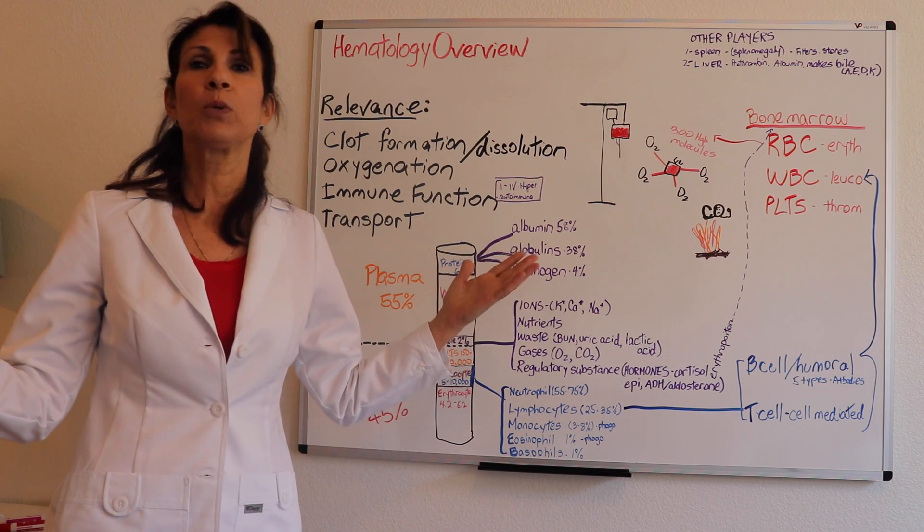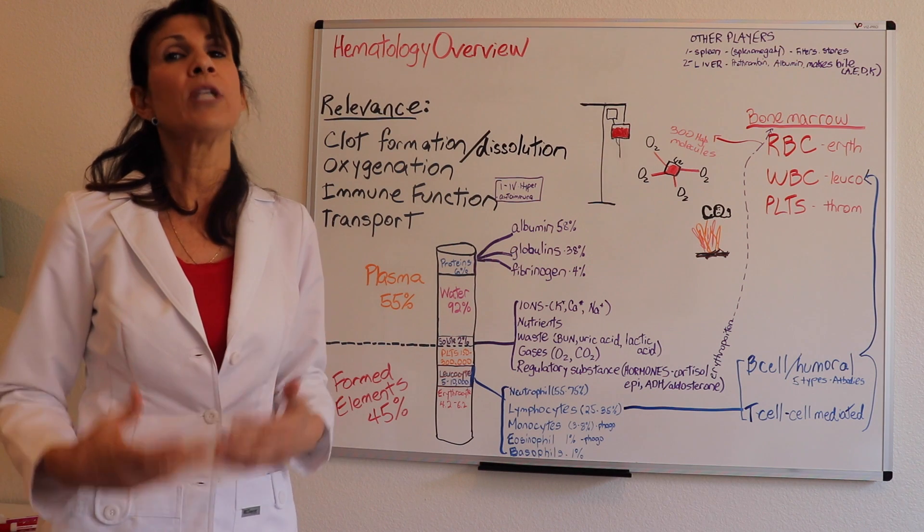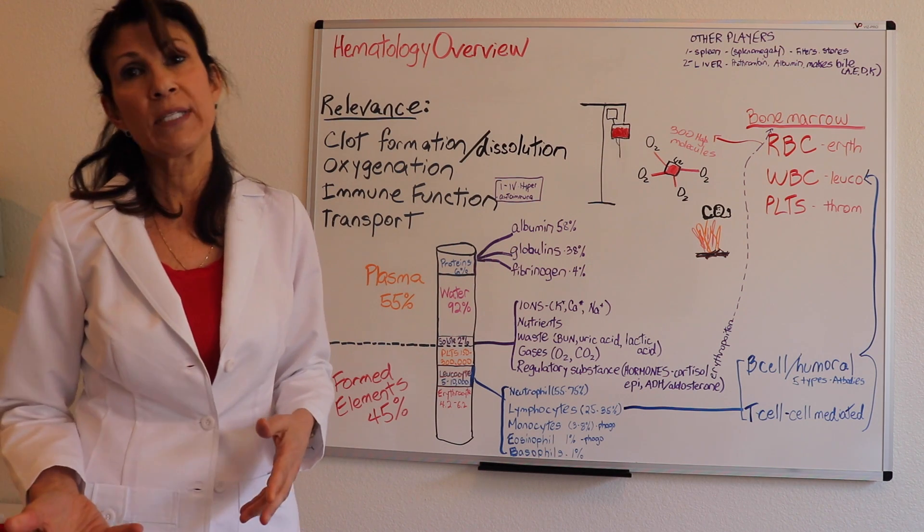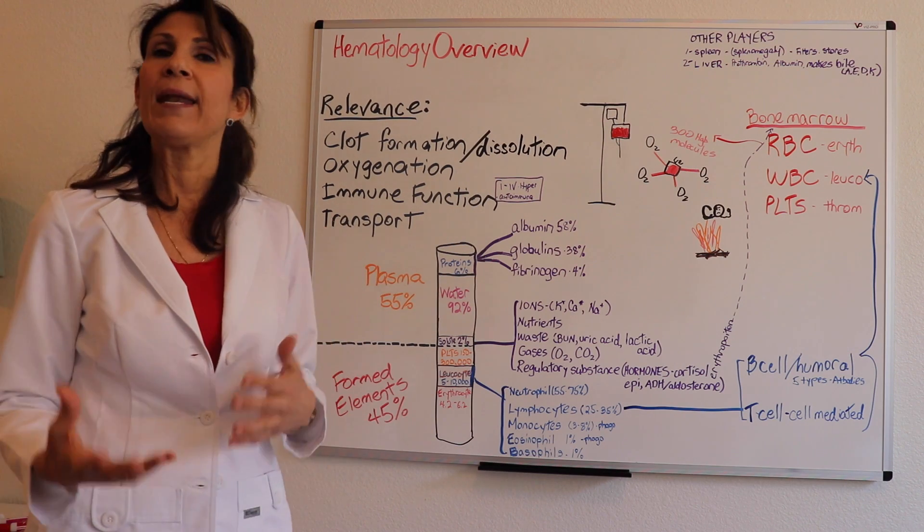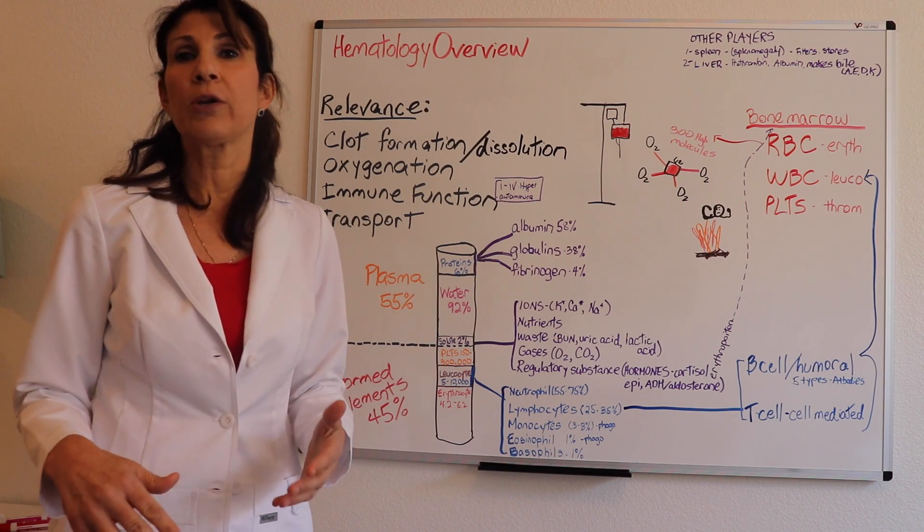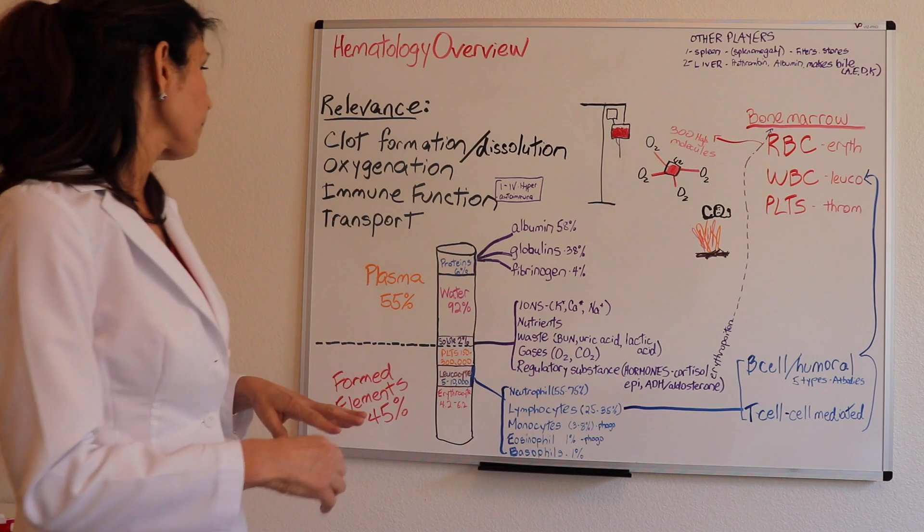Oxygenation. That's what it's all about, right? Without oxygenation, you're not going to have normal cellular metabolism and you're going to have cell death. So that's pretty important. Transport. Again, the transport mechanism of the blood is what ties in all our systems. It makes us whole and connected.